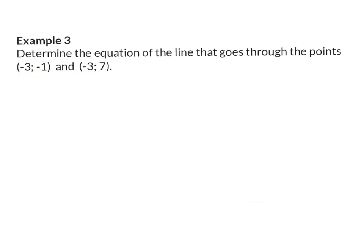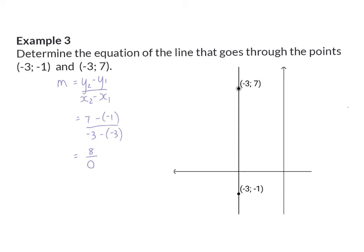Example 3. Determine the equation of the line that goes through the points (-3, -1) and (-3, 7). If you start off immediately calculating your gradient here, you will see that you get a 0 in the denominator, which means you have an undefined gradient. If you draw a sketch of this, you will see that it is a vertical line, and a vertical line has a change in x of 0. When you realize that the x coordinates of the two points given are the same, you shouldn't waste your time calculating the gradient, because this is a vertical line. A vertical line has a standard form of x is equal to a constant, which in this case will be x equals minus 3.